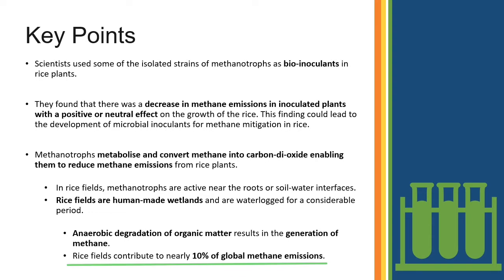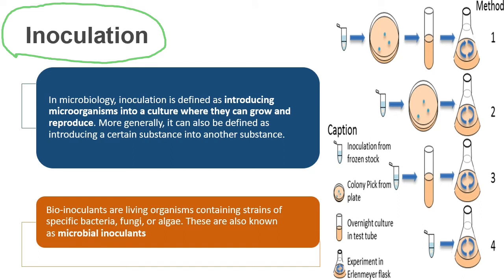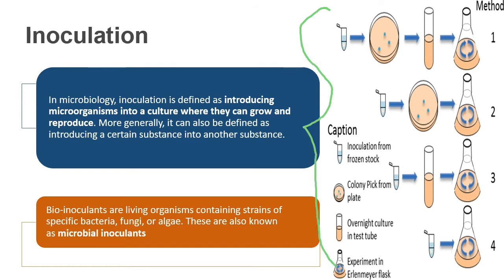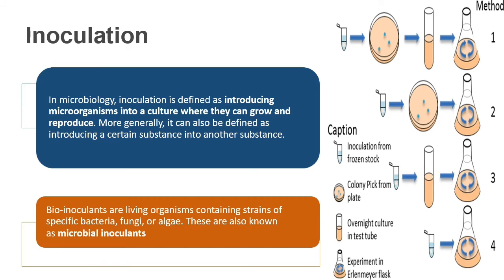Rice fields contribute nearly 10% of global methane emissions. Now, what is inoculation? Inoculation is the process of putting microorganisms into a culture where they can grow and reproduce. What are bio-inoculants? Bio-inoculants are living organisms containing strains of specific bacteria, or they can be fungi or algae. They are also known as microbial inoculants — that is the key thing to remember.